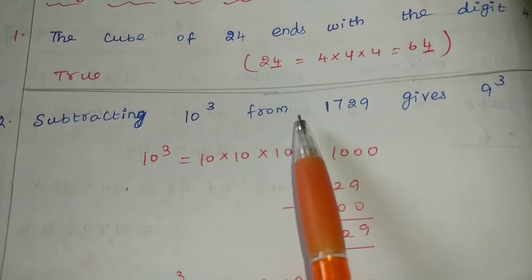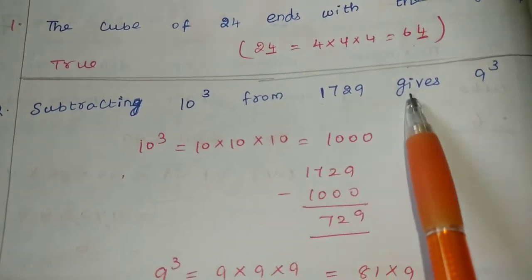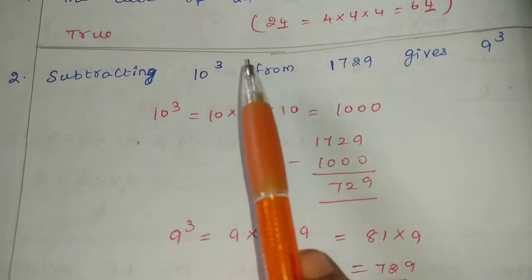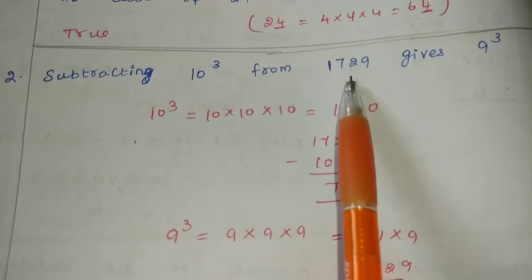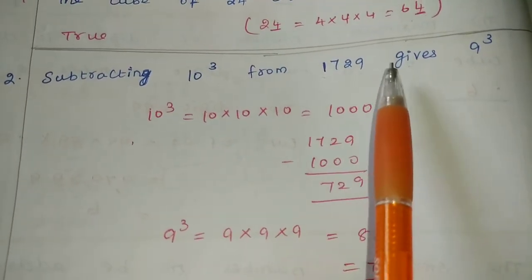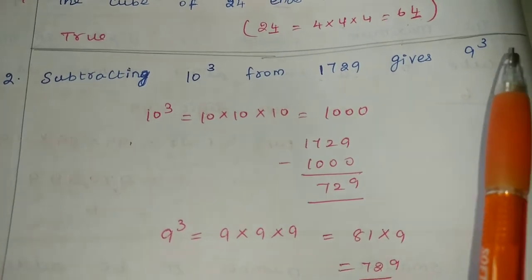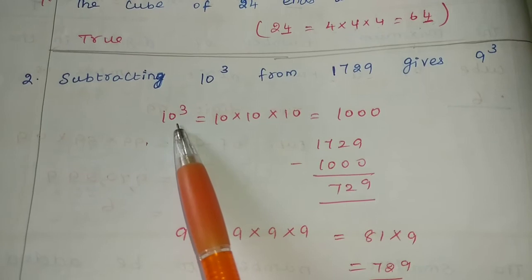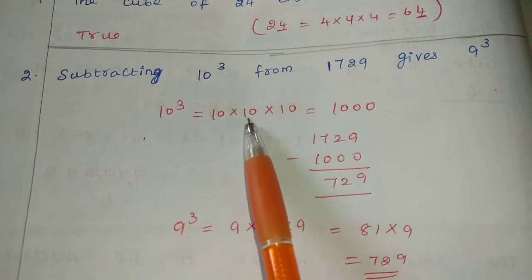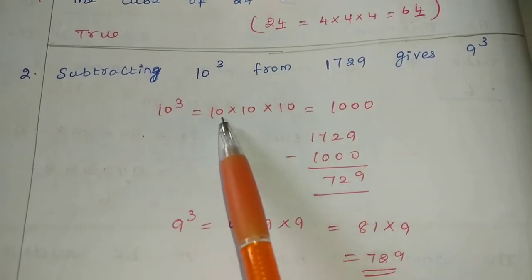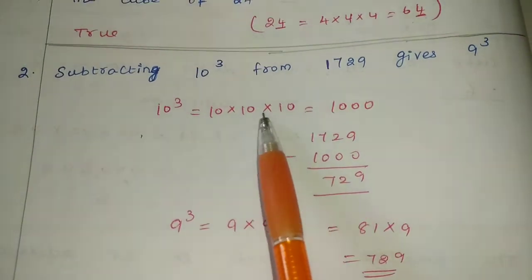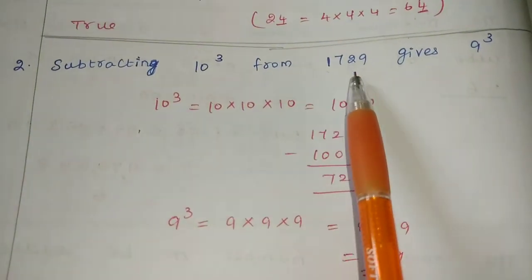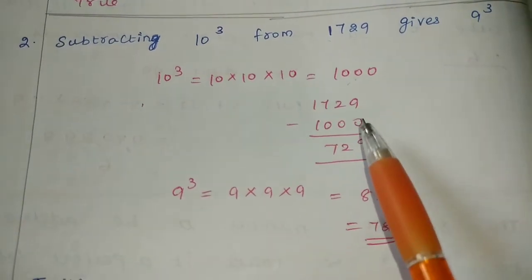Next: subtracting 10 cube from 1729 gives us 9 cube. So 1729 minus 10³ — let's check: 1729 minus 1000 gives 729.